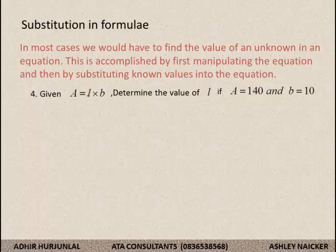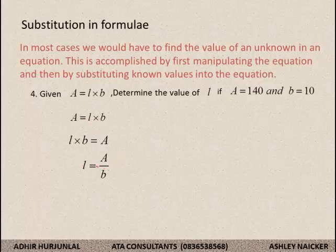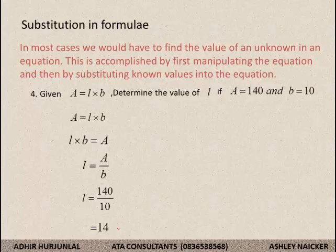Given A is equal to l times b. Determine the value of l if A is equal to 140 and b is equal to 10. I am going to solve for l, so I swap them around: l times b is equal to A, and therefore l is equal to A divided by b. Once I have this, the second part of the question: substitute A equal to 140 and b equal to 10, and l is equal to 14. They have not given me any units, so l is simply equal to 14. If units are given, your answer should be in a certain unit; if no units, you do not insert any.